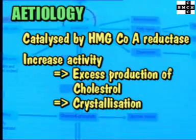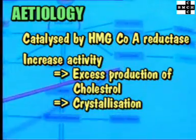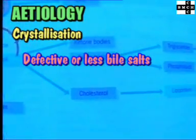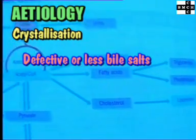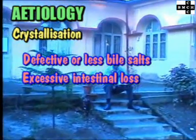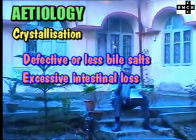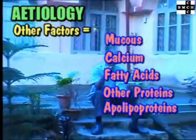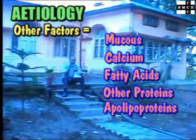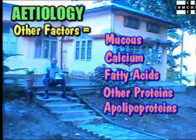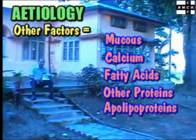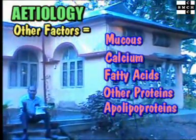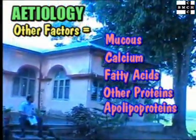Crystallization of cholesterol occurs when there is excess intestinal loss of bile salts or when there is abnormal gallbladder motility. Other factors that favour nucleation, such as mucus, calcium, fatty acids, and other proteins and apolipoproteins, have also been described.